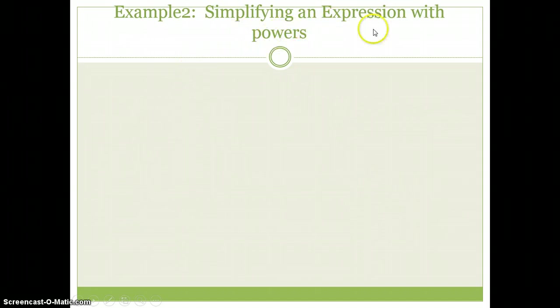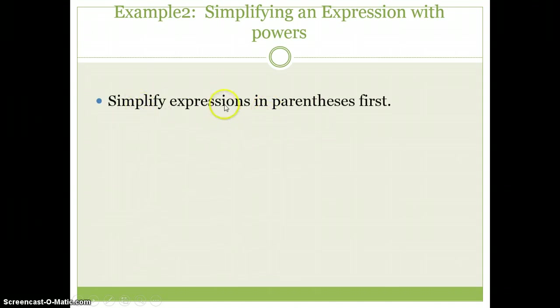Here's example two, simplifying an expression with power. We're going to add a little bit to this. Still power to power rule. A couple of things I want to talk about. Simplify expressions in parentheses first. If you can multiply something together, do it - coefficients, possibly like base add exponents if they're both in parentheses.